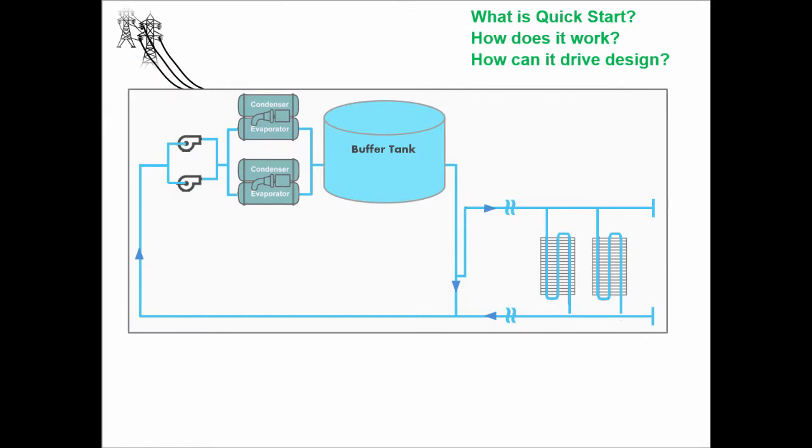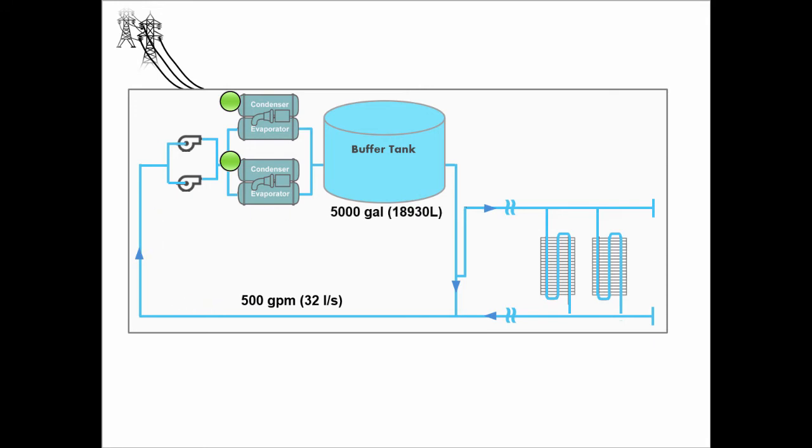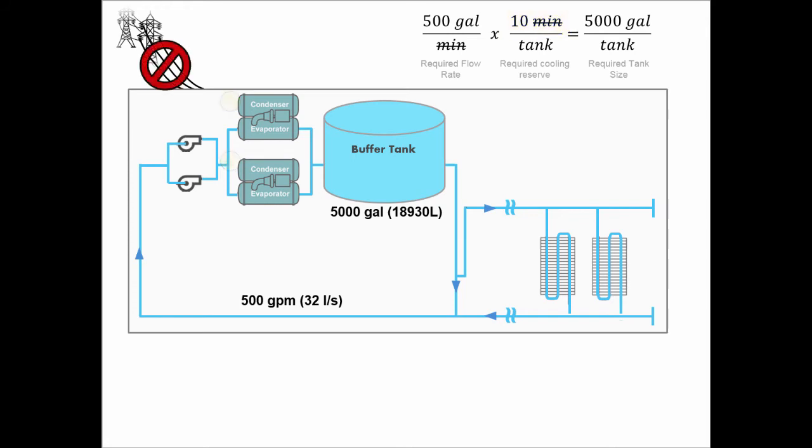Now getting back to one of the original questions, how do chillers start and load times relate to buffer tank sizing? Well, consider the example of a data center with a 500-gallon-per-minute chilled water requirement. After the chilled water leaves the chiller, it flows into a 5,000-gallon tank, which based on the flow rate need, should be able to provide approximately 10 minutes of chilled water, meaning if there was a power loss, this reserve could fill the required cooling gap until the chillers were back online and meeting the required load.